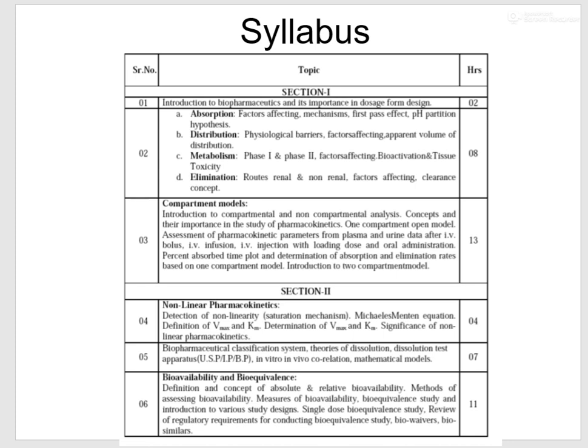Unit 5 will cover the bio-pharmaceutical classification system, theory of dissolution, dissolution test apparatus, in vitro-in vivo correlations, and various mathematical models. Unit 6 will be about bioavailability and bioequivalence.